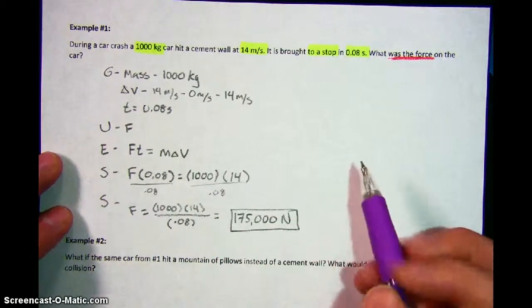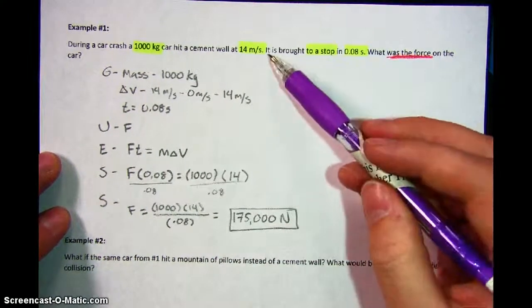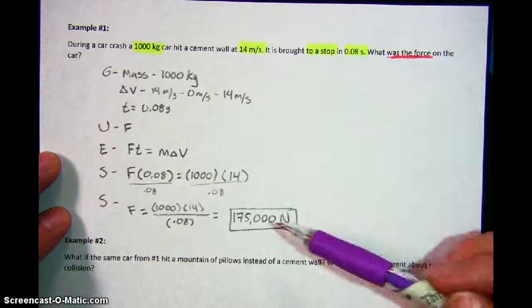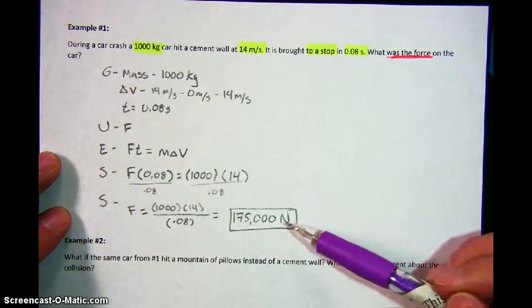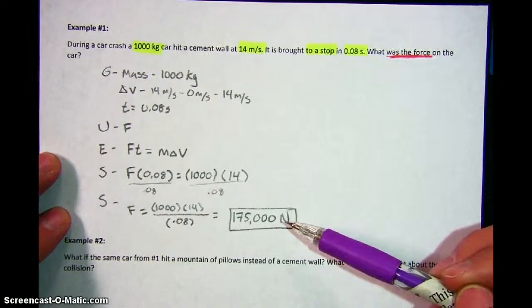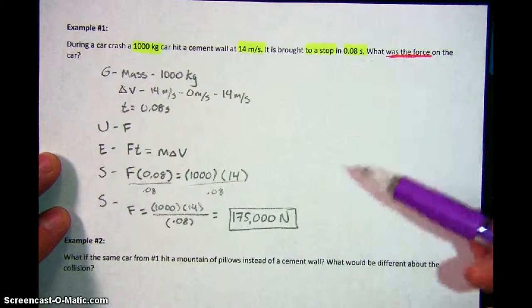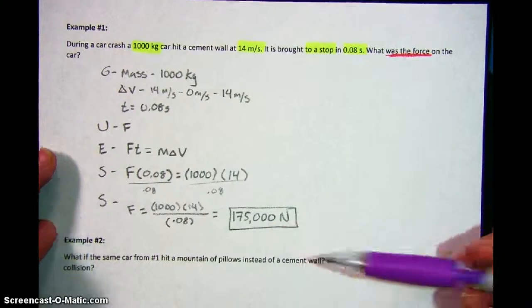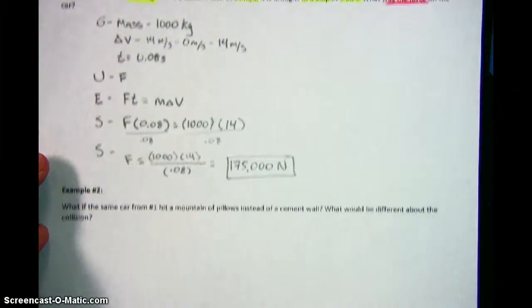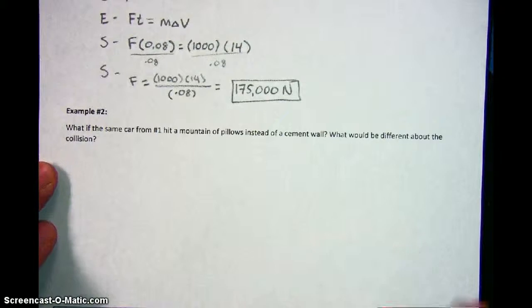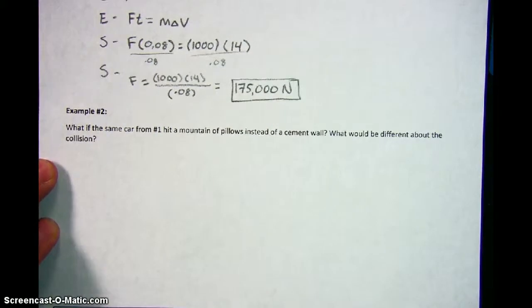So in other words, when this car crashed into the wall and it came to a stop, the wall put 175,000 newtons worth of force onto the car in that much time. That's a ton of force. So here's the next question. What if the exact same car hit a mountain of pillows instead of a cement wall? What would be the difference about that collision?